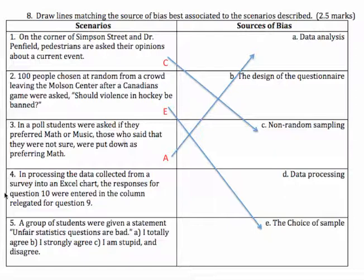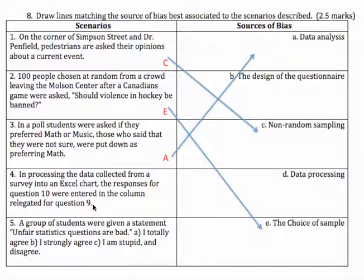Number four: in processing the data — and that's a giveaway right there. In processing the data collected from a survey into an Excel chart, the responses for question 10 were entered in the column designated for question 9. So they made a mistake in processing the data. It's data processing.